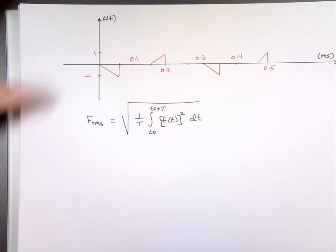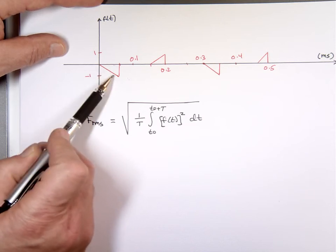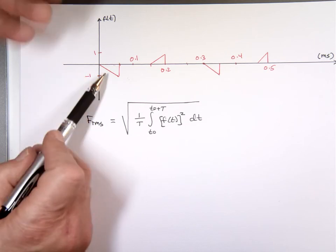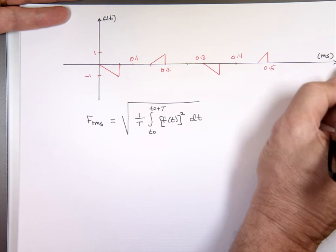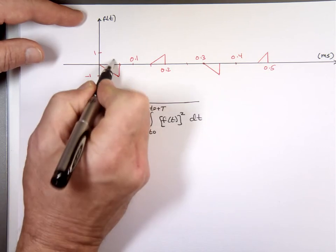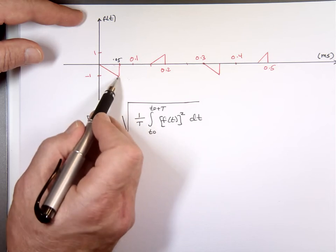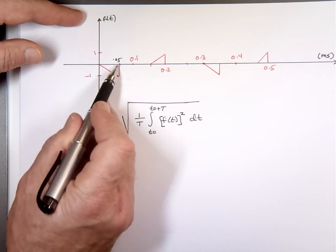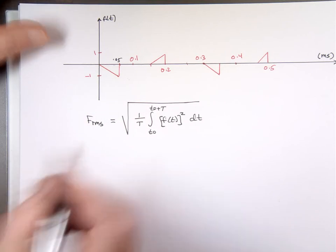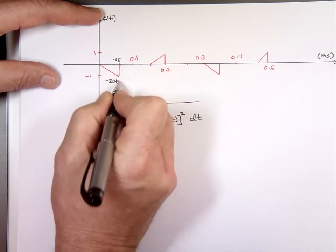Now I need to know the expression for these segments. Notice this is a straight line, so the equation is mt plus b. This has a negative slope. The slope is rise over run: the fall is negative 1 and the run is 0.05, so that's negative 1 over 0.05, which is negative 20. So the equation for this piece is negative 20t, and the y-intercept is 0.